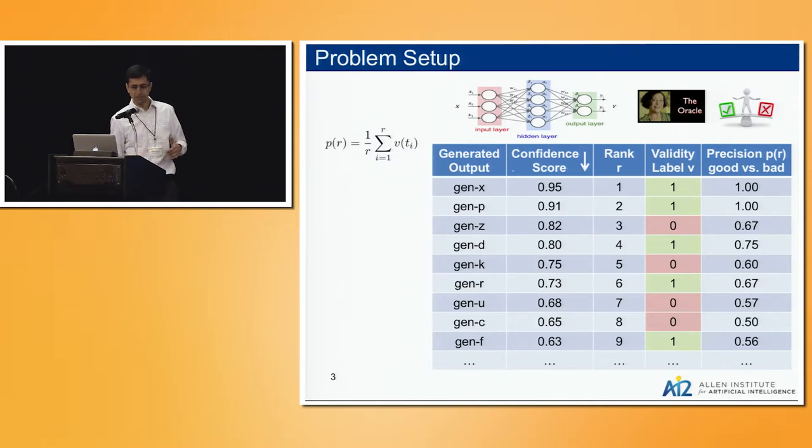If you had access to that, you could compute the precision of such a model, which is the running precision, the average of the zero one numbers for the top K items in this list. For example, the precision of the very first item is one because it's good. After the third item, the precision is 0.67 because one of the items was incorrectly produced.